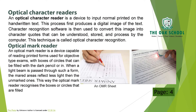Optical Character Reader: an optical character reader is a device to input normal printed or handwritten text. This process first produces a digital image of the text. Character recognition software is then used to convert this image into character codes that can be understood, stored, and processed by the computer. This technique is called Optical Character Recognition.